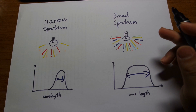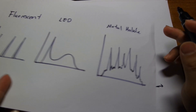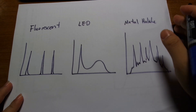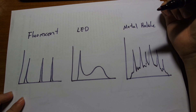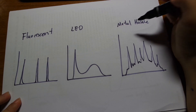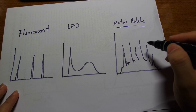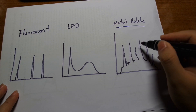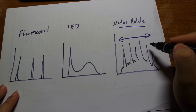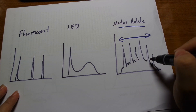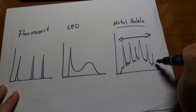Different types of light bulbs will have different looking spectrums because it depends on the way they produce light. Something like a metal halide produces light from an arc of electricity, so it has these weird spikes all over the place. It has a fairly broad spectrum and comes in a lot of wavelengths, but it will come in this variety of spikes.